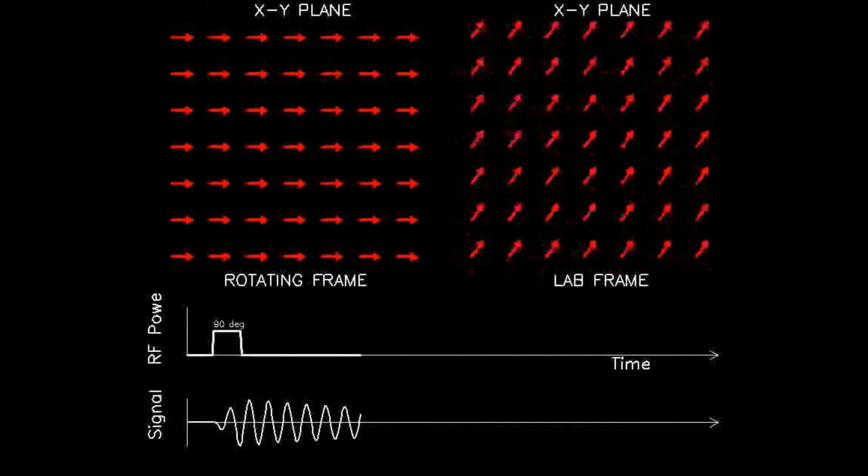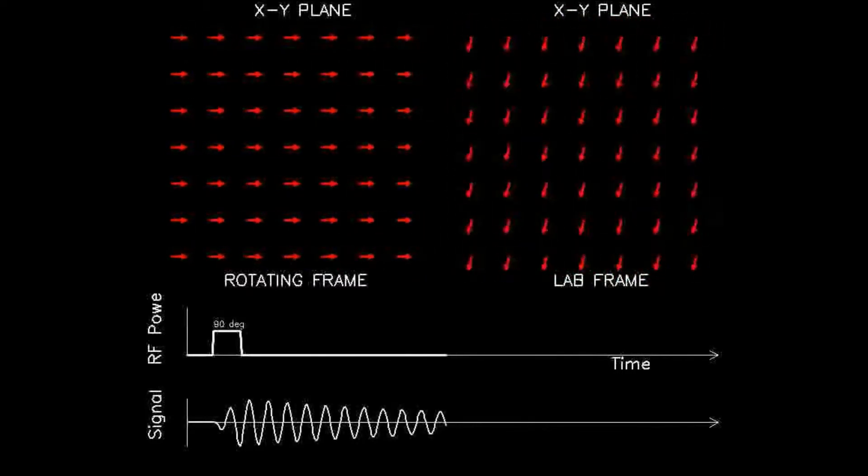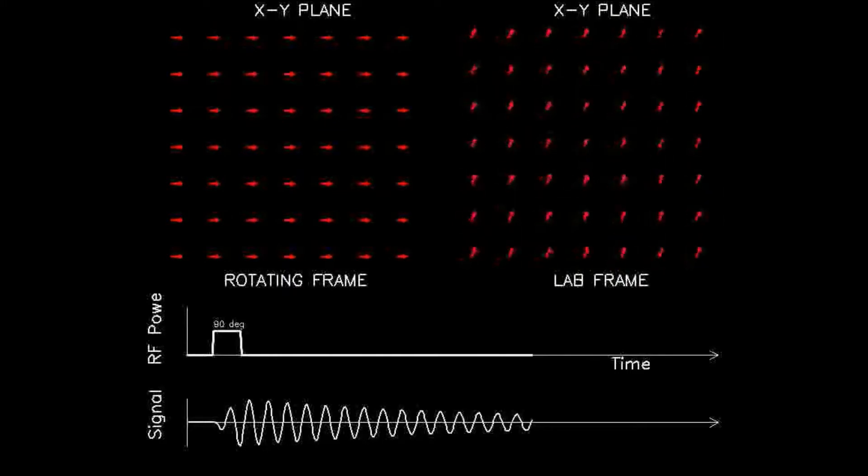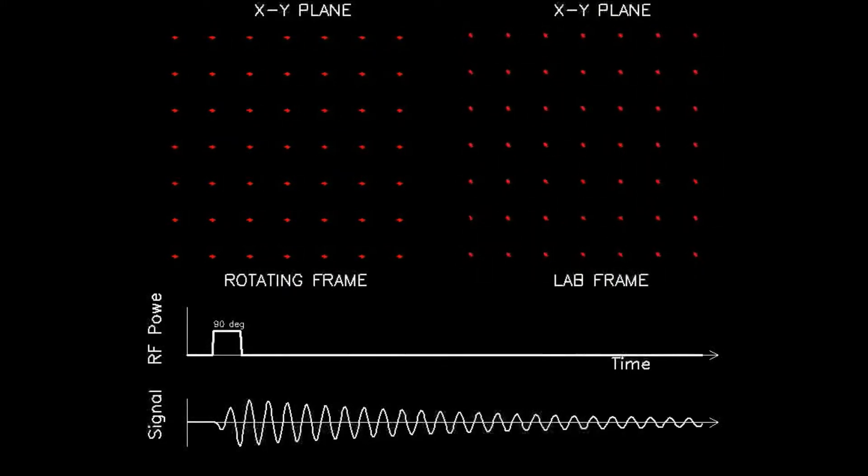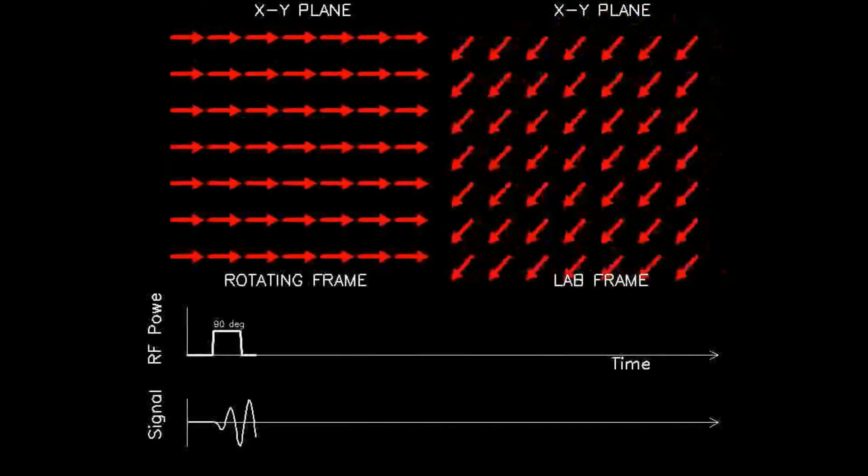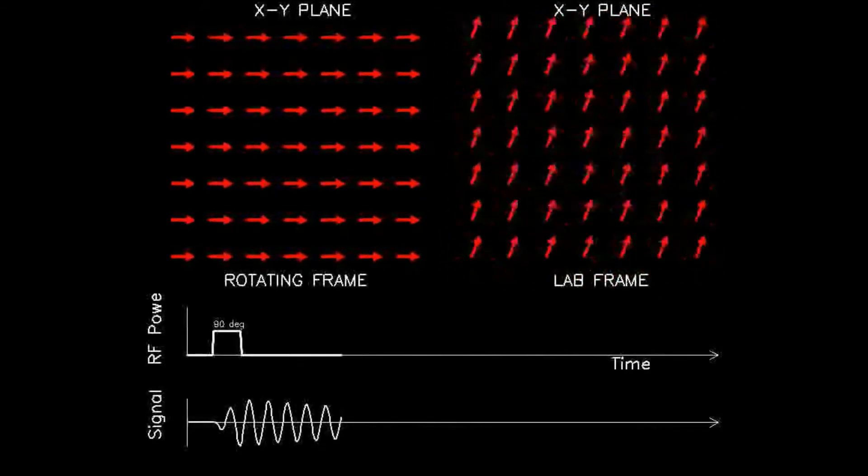Instead of illustrating the physics of a single spin, this section of animations depicts the physics of multiple dipoles, in this case an array of 7x7 spins, again all viewed along the z-axis of B0 and projected into the xy plane.